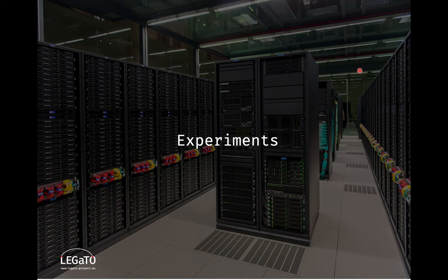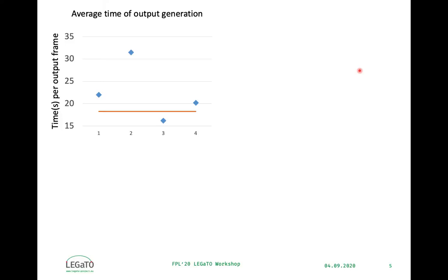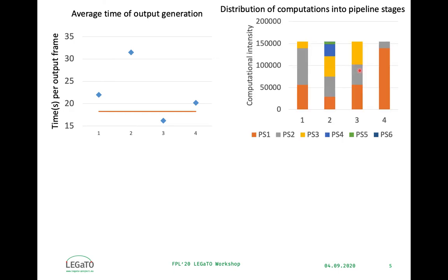Let's have a quick look at the experiments. This figure shows the average time of output generation of four different pipeline configurations compared to the baseline, which is a data parallel implementation of VGG-16, an image classification CNN — the lower is better. The second figure shows the distribution of computations, or the layers, into pipeline stages — balanced is better.